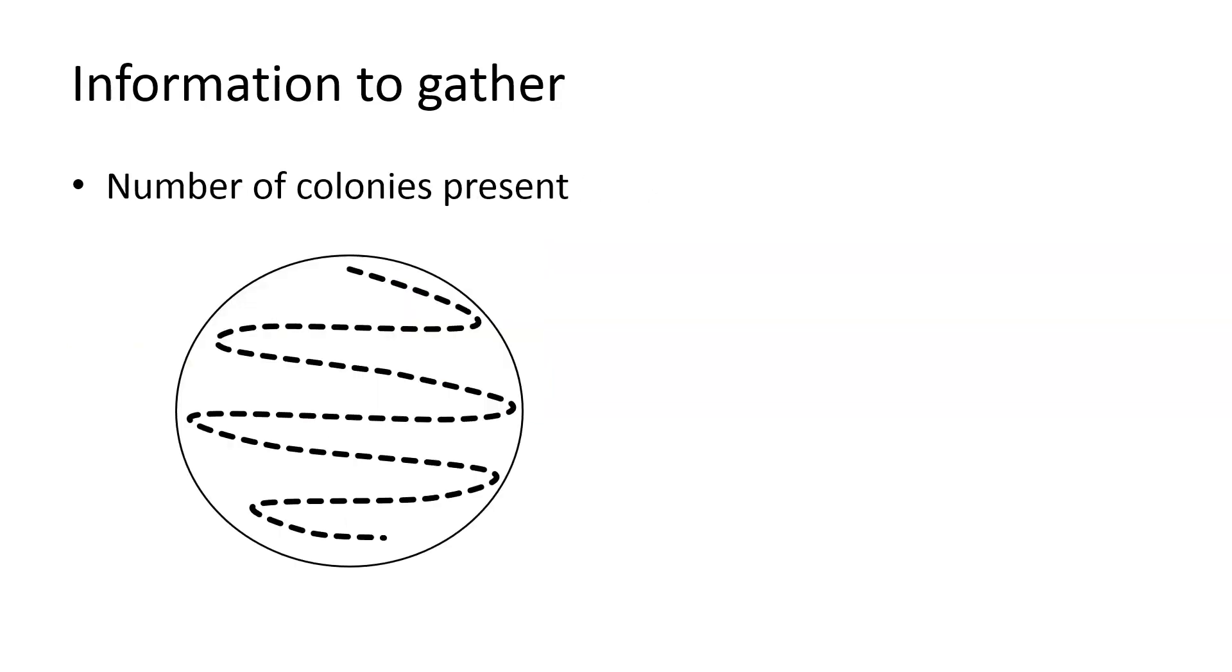We need to count the number of colonies present. We count, placing a mark after each ten. This gives us a total of 72.